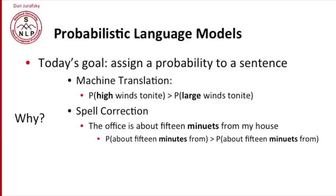In spelling correction, we see a phrase like 15 minuets from my house. That's more likely to be a mistake for minutes. And one piece of information that lets us decide that is that 15 minutes from is a much more likely phrase than 15 minuets from.